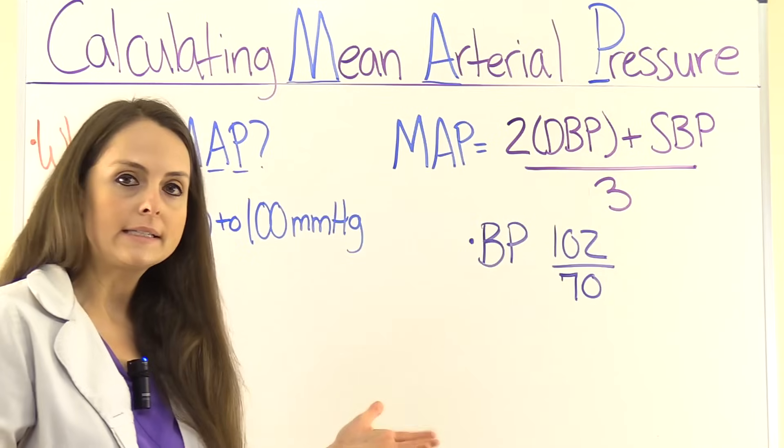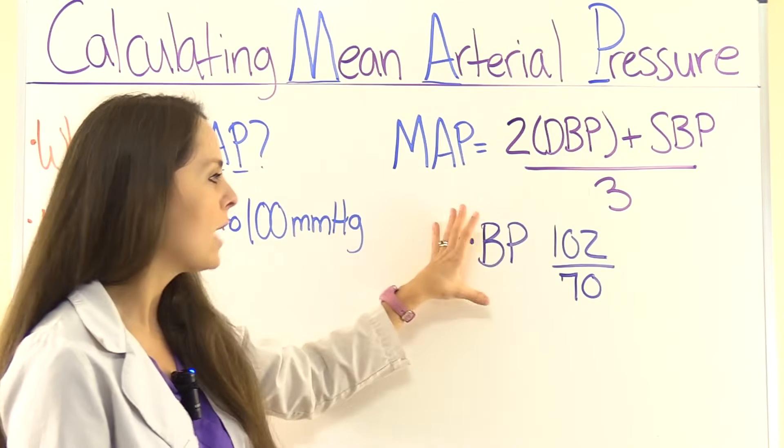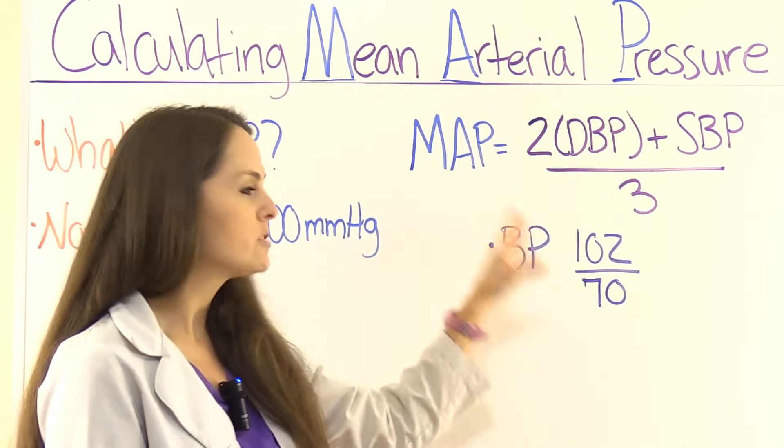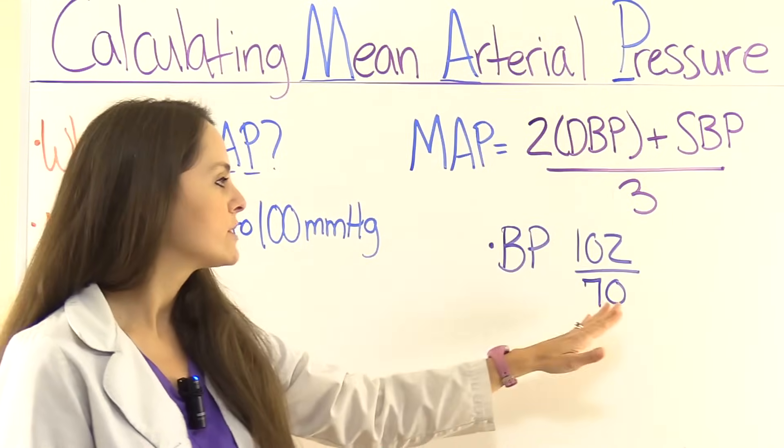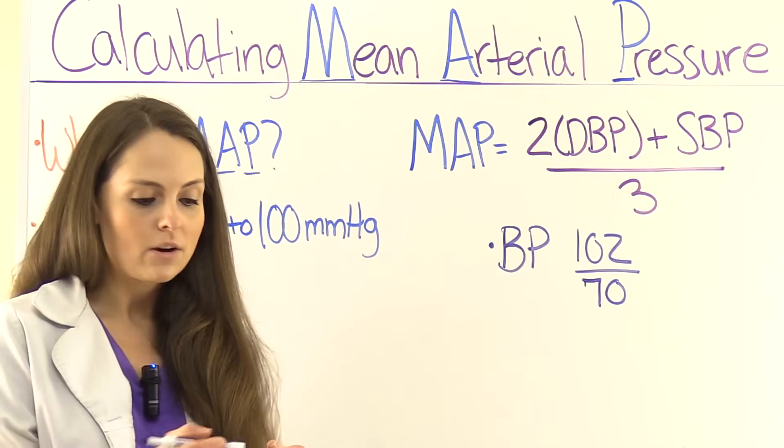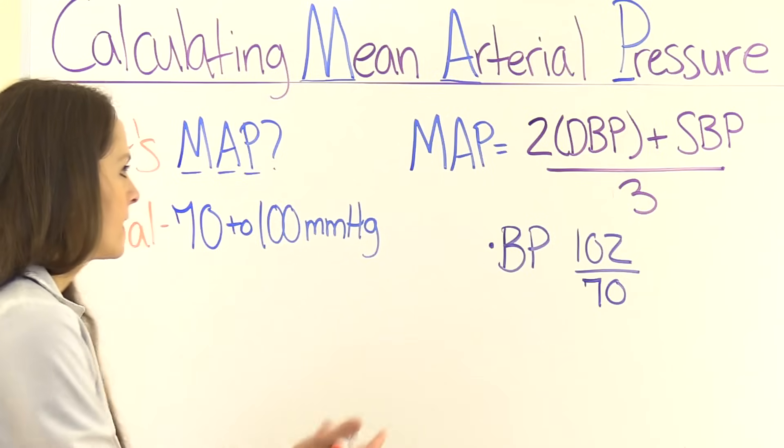And to calculate your MAP, what you need to know is you need to know the person's blood pressure. And here, our blood pressure is 102 over 70. So let's set our problem up and work it. Okay.